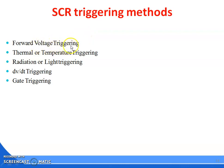First is forward voltage method of triggering. Second is dV/dt triggering. Third is gate triggering. Fourth is radiation or light triggering. Fifth is thermal or temperature triggering.